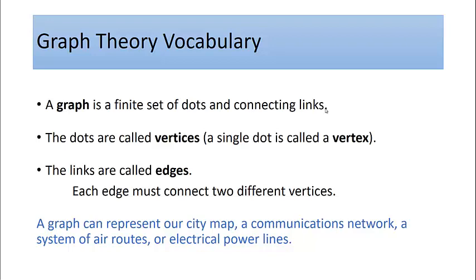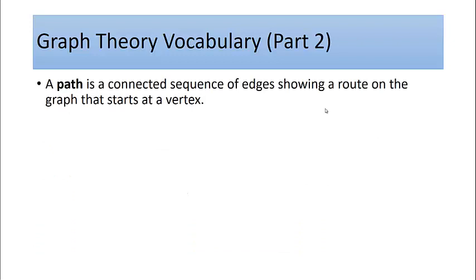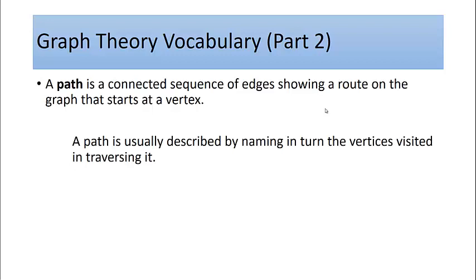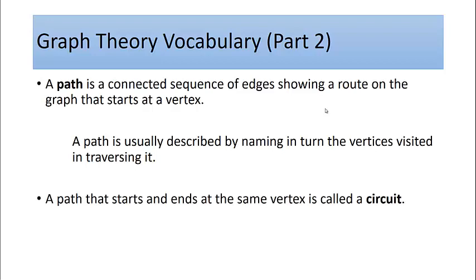A couple more definitions. A path is a connected sequence of edges showing a route on the graph that starts at a vertex. A path is usually described by naming in turn the vertices visited and traversing it. A path that starts and ends at the same vertex is called a circuit.